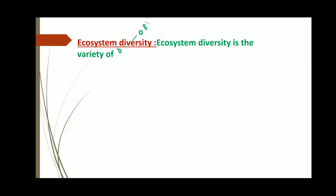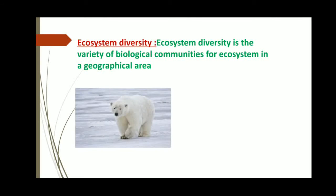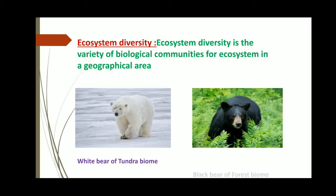Now ecosystem diversity, or ecological diversity. Ecosystem diversity is the variety of global biological communities or ecosystems in a geographical area. For example, the white bear of the tundra biome and the black bear of the forest biome — these two animals are different only because of ecological diversity.